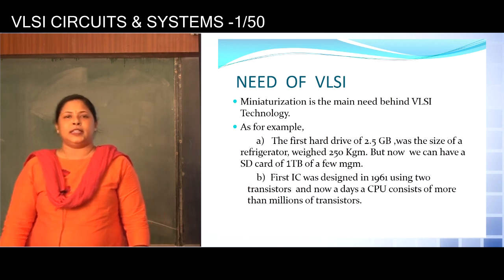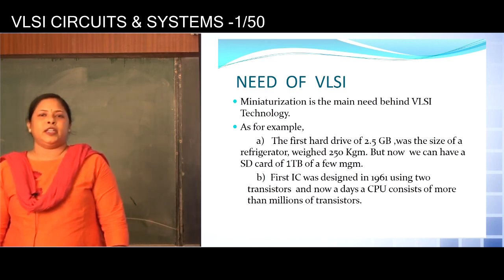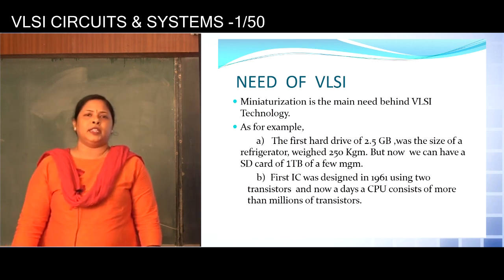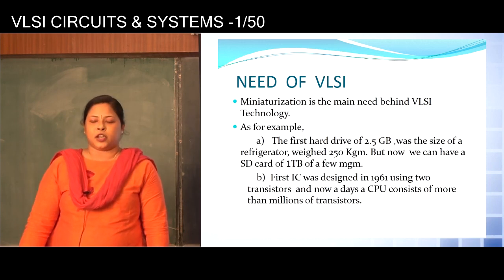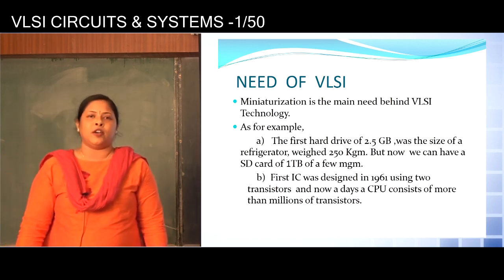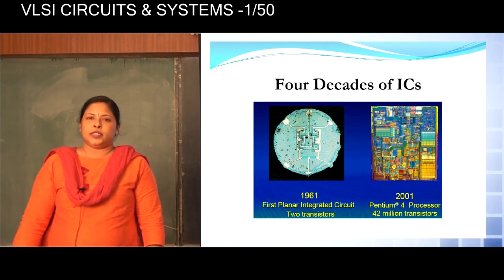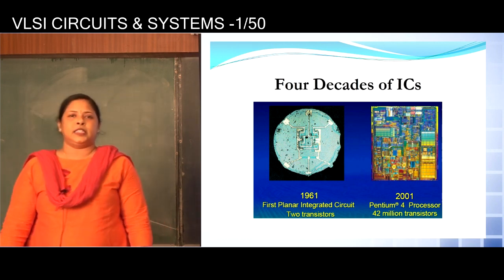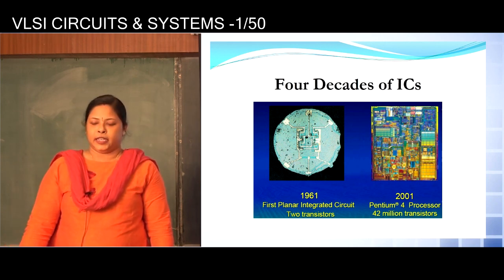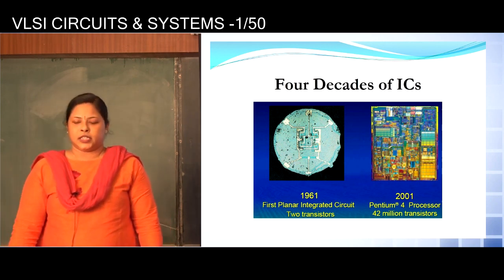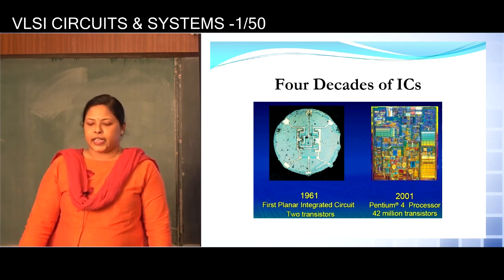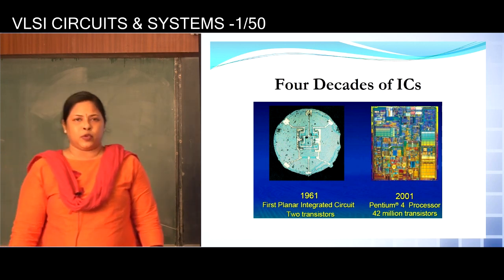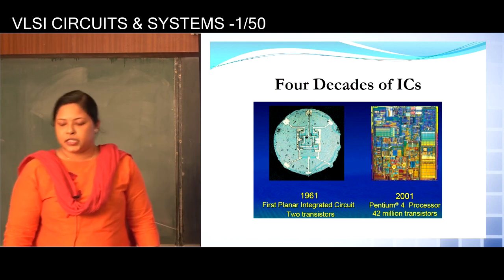The first IC was designed in the year 1961 and incorporated only 2 transistors. But nowadays the processors we are using can incorporate millions to trillions of transistors. Here you can see two pictures: the first IC fabricated by Jack Kilby in Texas Instruments Lab — a 2-transistor circuit — and a Pentium 4 processor which incorporated millions of transistors.